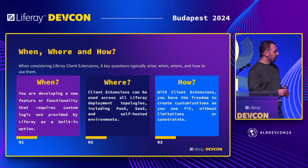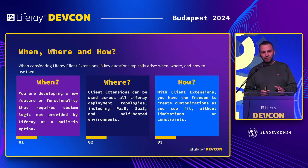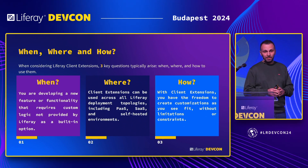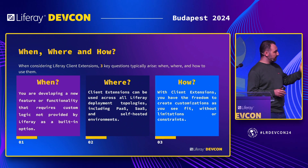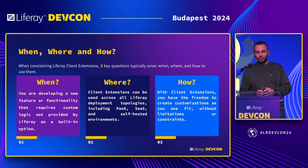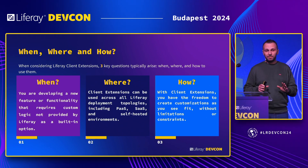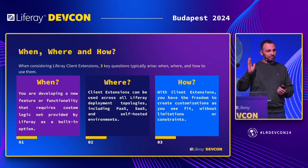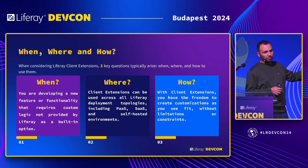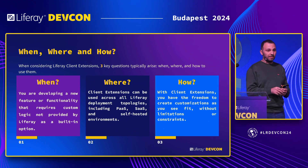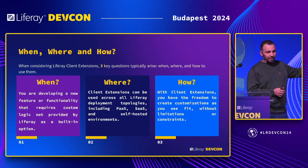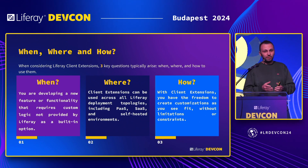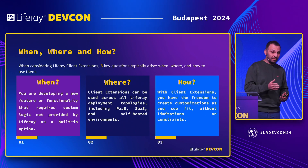The 'where' is that you can use the same client extension on PaaS, SaaS, or self-hosted — no change. My favorite part is the 'how,' because there is no specific 'how' — you do it the way you like and Liferay will adapt. The only thing you need to add is two files that act like an ID card, telling Liferay your logic sits somewhere else. This allows no limitation on technology stack — any language for your microservice or front end.